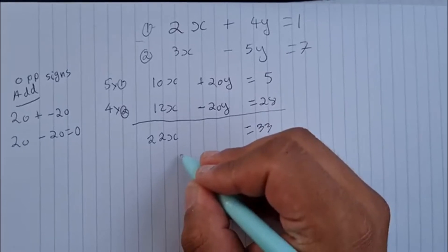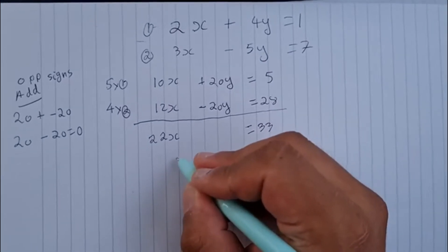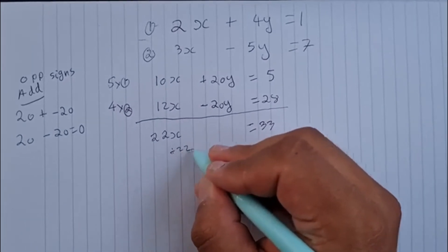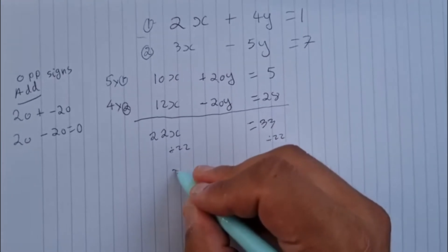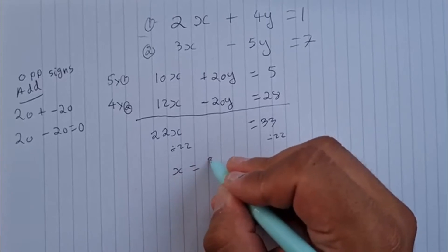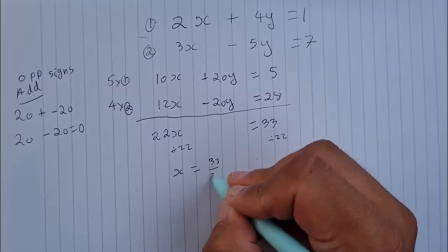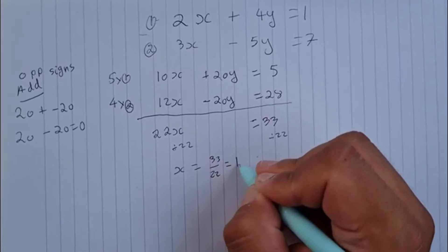And then we have 22x equals 33. I divide both sides by 22, and that leaves me with an answer of x equals 33 divided by 22, which is going to be 1.5.